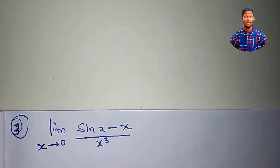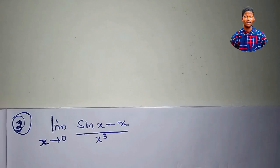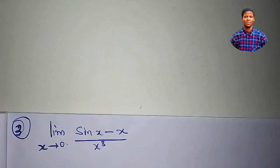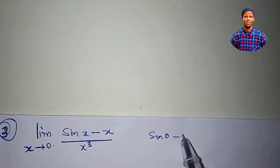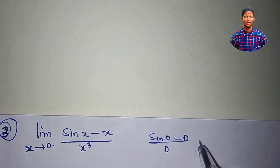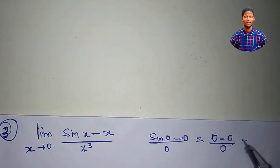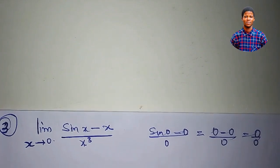There are some cases where we need to apply L'Hôpital's rule more than once — in some cases even more than 2 times, up to 3 times. Consider the limit of sine x minus x all over x cubed as x approaches 0. Plugging in 0 gives sine 0 minus 0 over 0 cubed, which is 0 over 0. We keep getting 0 over 0, so we have to apply L'Hôpital's rule.